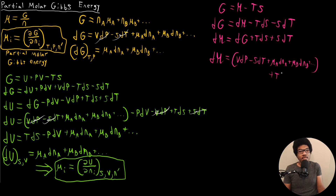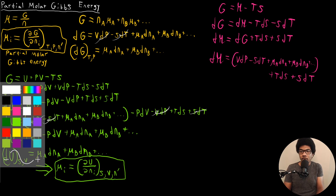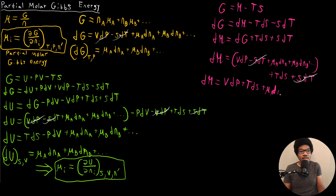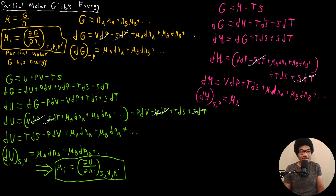The SdT terms cancel out, and we can re-express the enthalpy change as dH equals VdP plus TdS plus mu_A dN_A plus mu_B dN_B plus dot dot dot. The natural variables for the enthalpy are entropy and pressure, so if we hold entropy and pressure constant, we get that same sum of chemical potentials for each of our components.